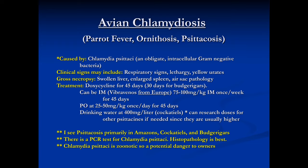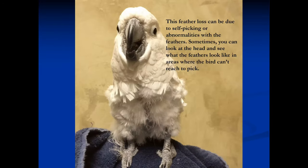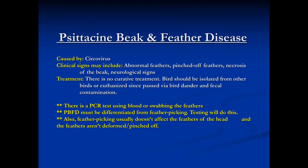When we get into beak and feather disease, we now know it's caused by circovirus. We see abnormal feathers that are pinched off and twisting — they look very odd. It's not just that feathers are gone; they look pinched and twisted.